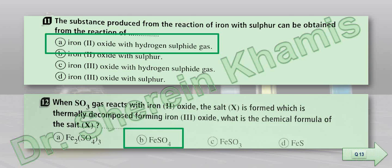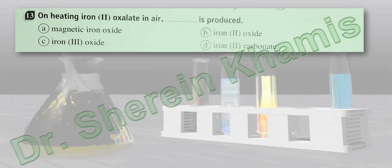Question number 13 says that on heating iron(II) oxalate in air, what will be produced? The right answer will be iron(III) oxide — we get iron(III) oxide due to heating in air.